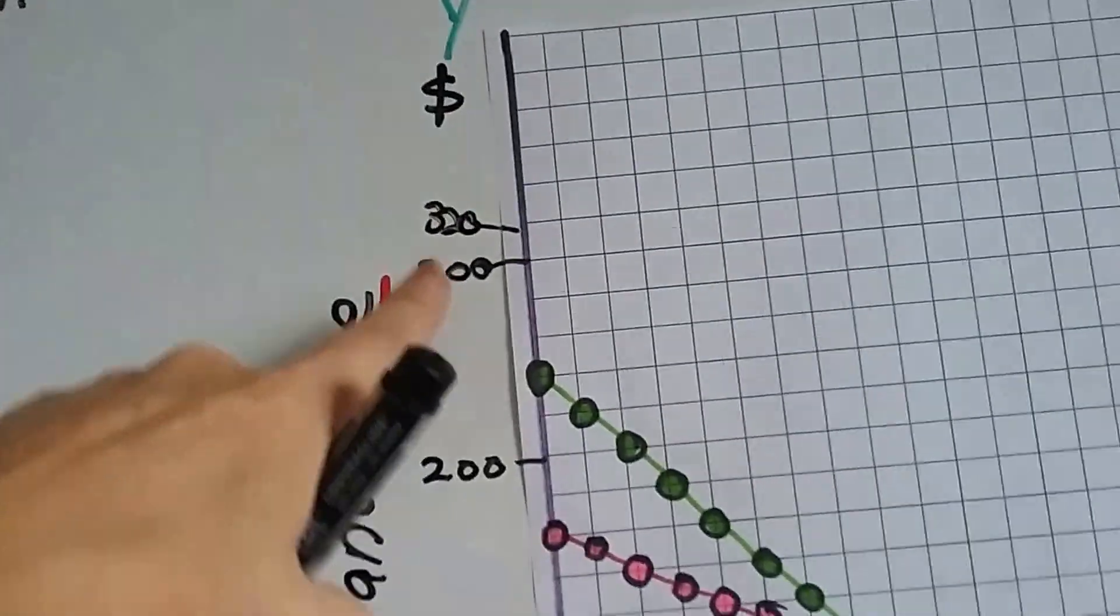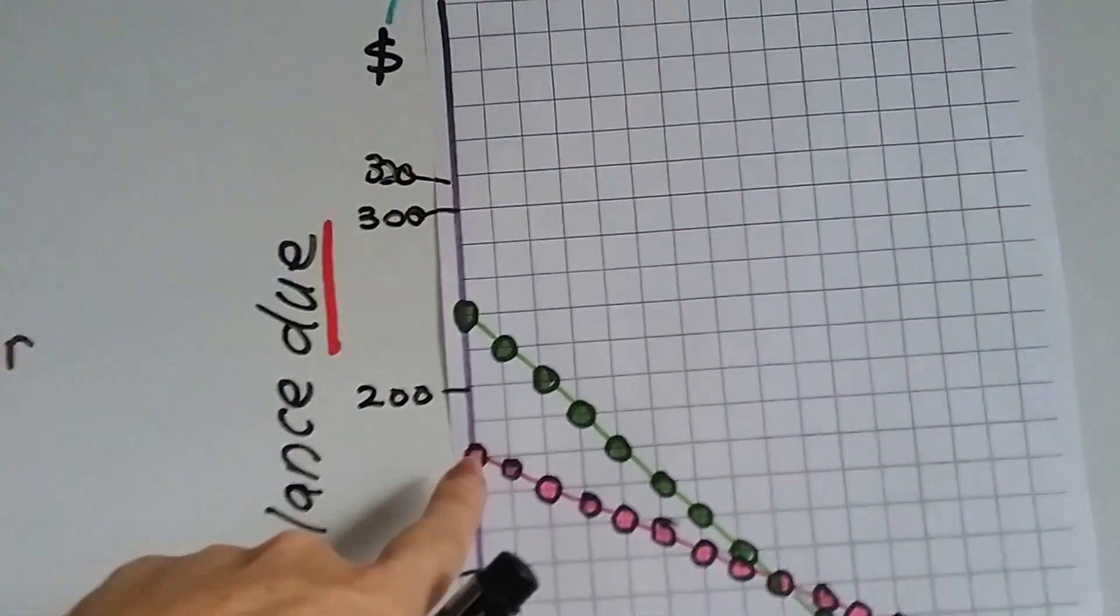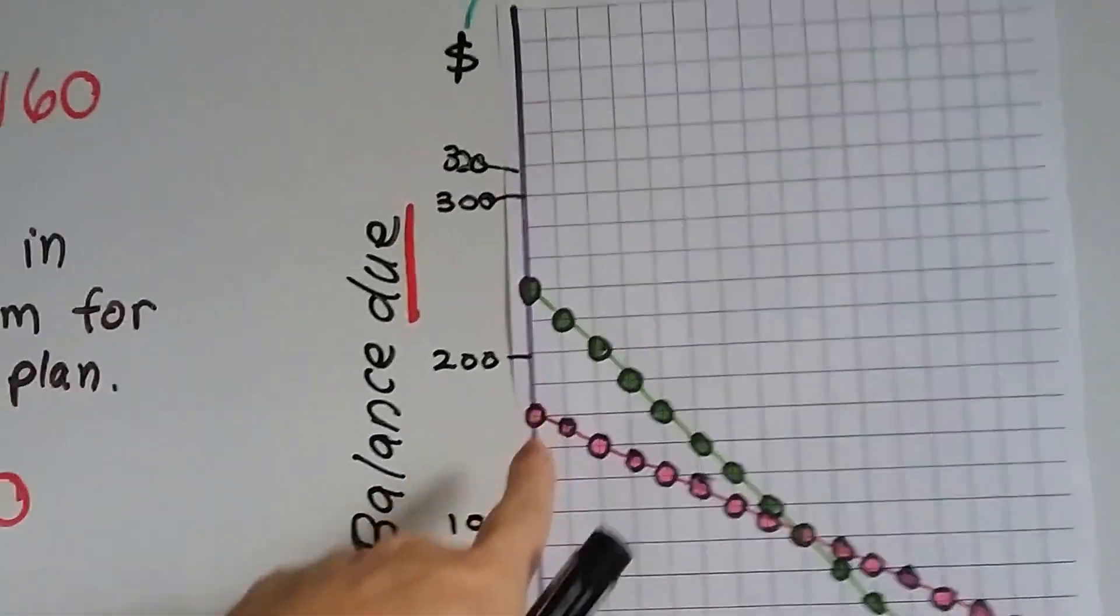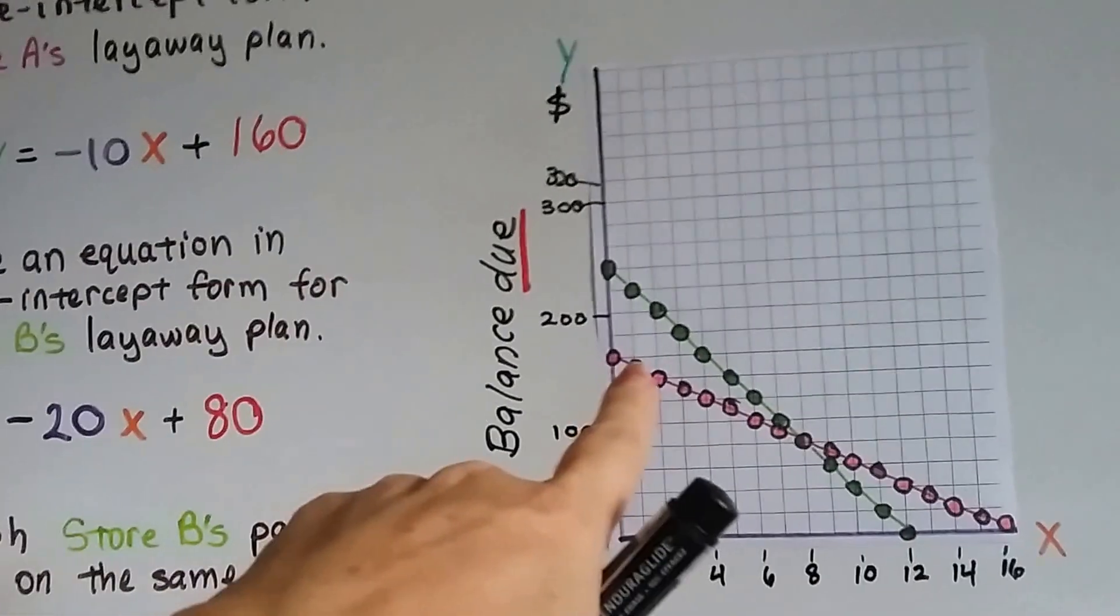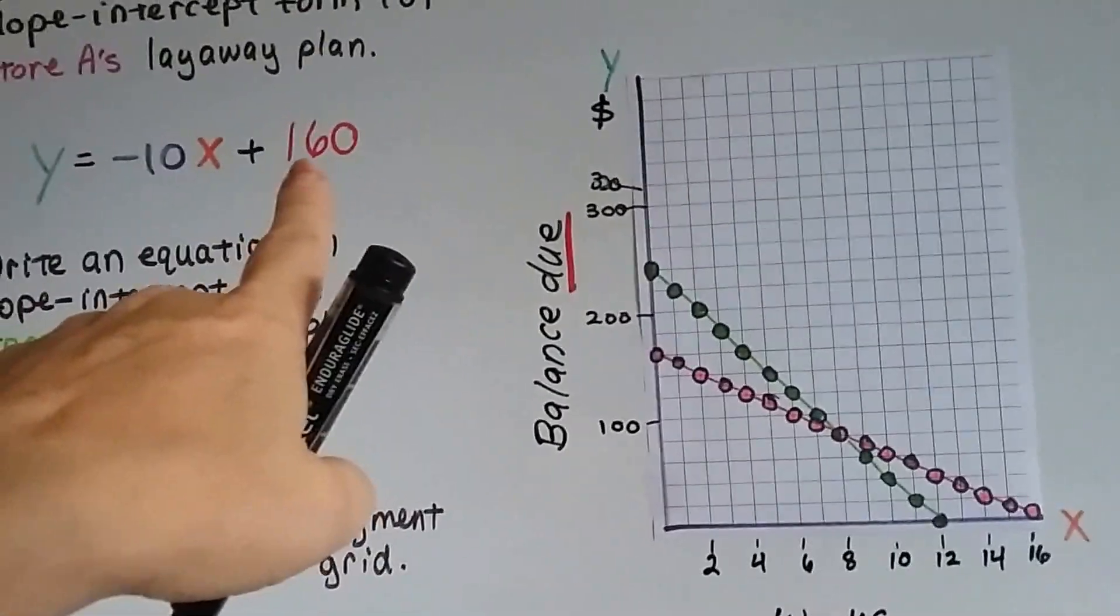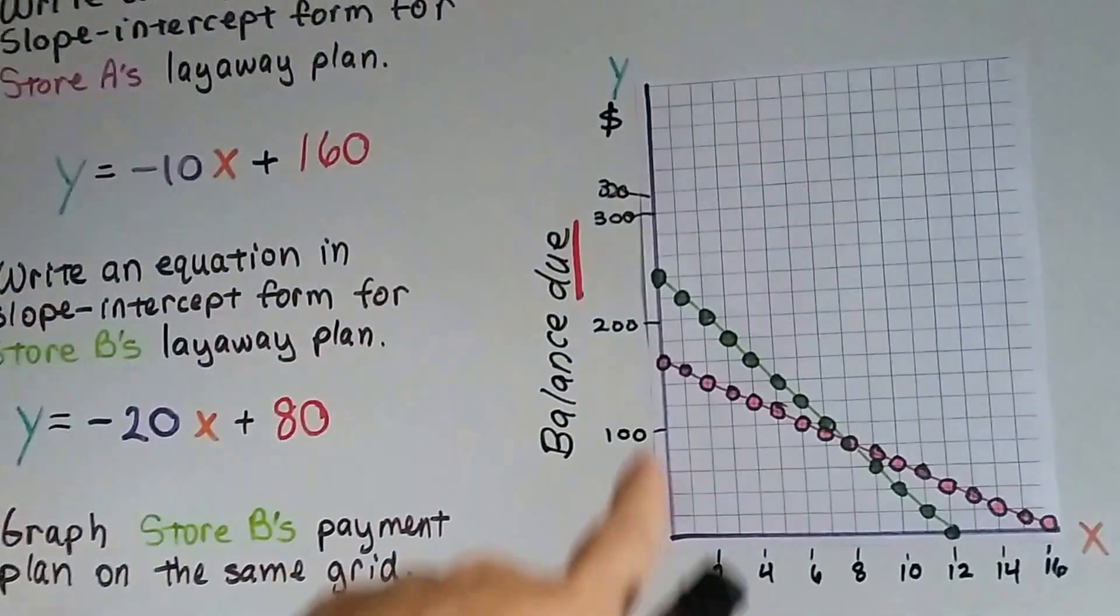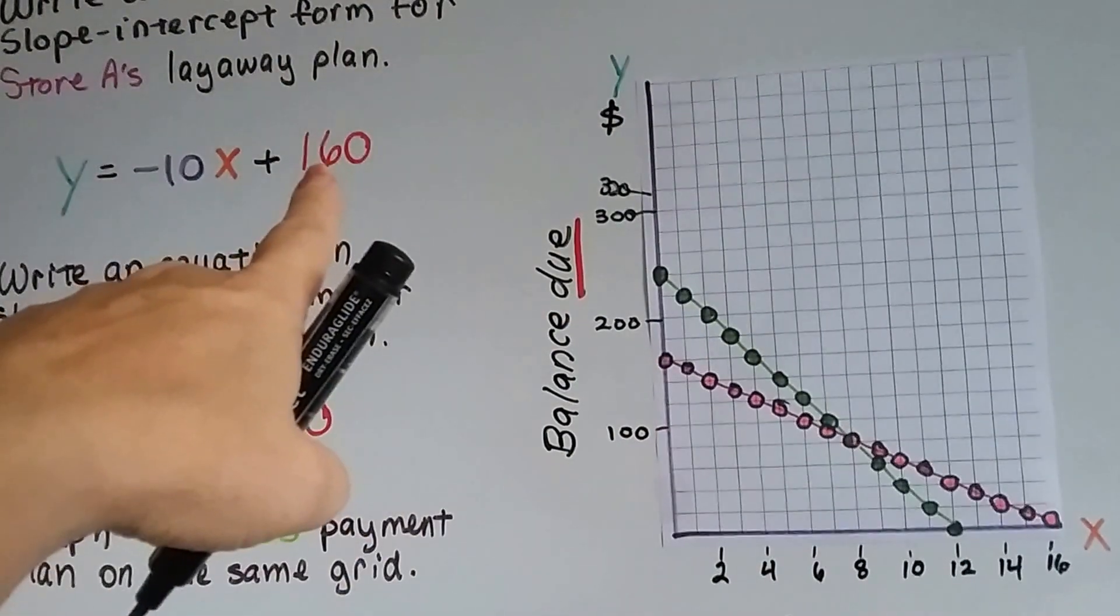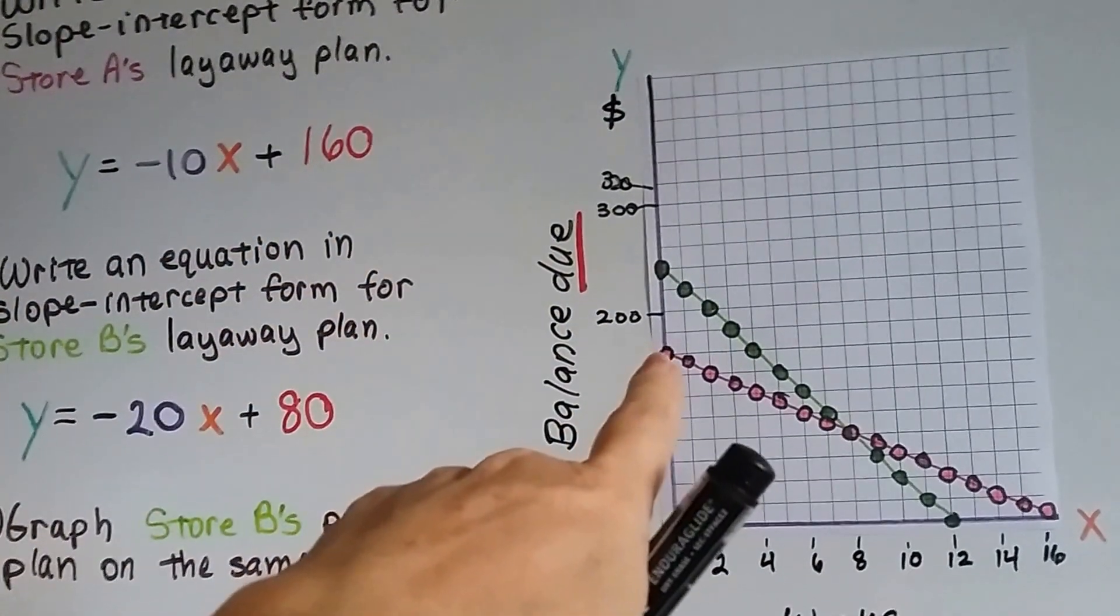That's the $320 mark. That's how much the game cost. But this is the balance due right when he first starts the layaway plan. So we know that the y-intercept B, the red one, had to be $160 for that balance to be $160.